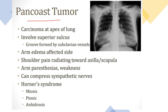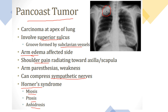Pancoast tumor is a unique lung cancer affecting the upper part of the lung involving the superior sulcus. Subclavian vein obstruction presents as arm edema. Superior vena cava syndrome is another complication presenting with arm edema plus neck vein engorgement and facial edema. Shoulder pain may result from nerve compression. Compression of the sympathetic nerve chain causes Horner syndrome: the triad of miosis (constricted pupil), ptosis (drooping eyelid), and anhydrosis (no sweating on the affected side of the face).